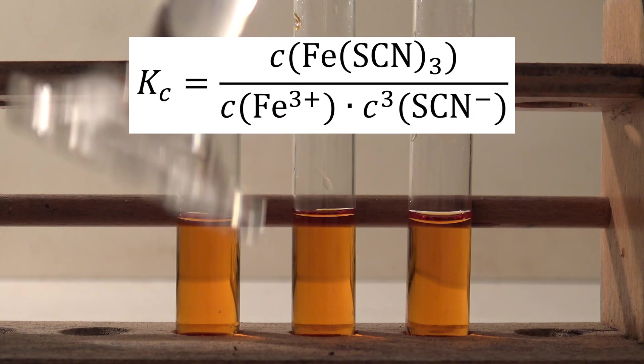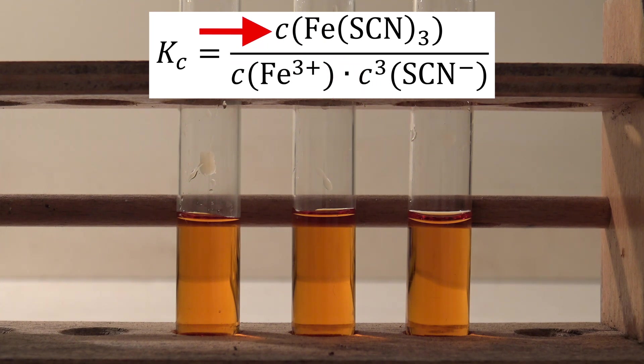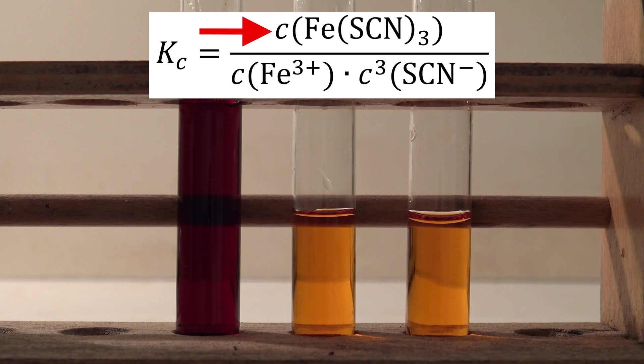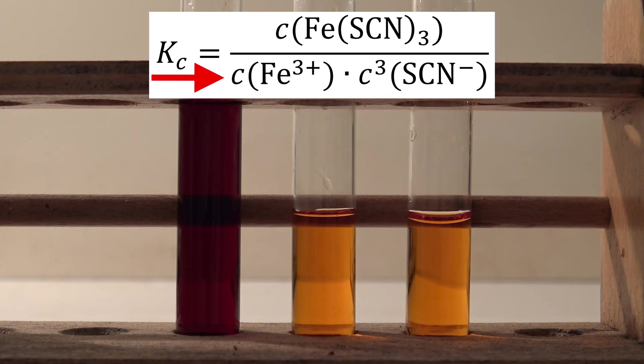So for example, when the concentration of the thiocyanide is increased, the concentration of the iron thiocyanide has to increase so that Kc does not change. The exponent of the concentration of the thiocyanide causes it to have a higher effect on the equilibrium than the iron(III) ions.